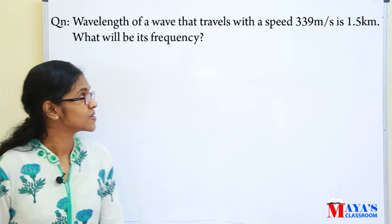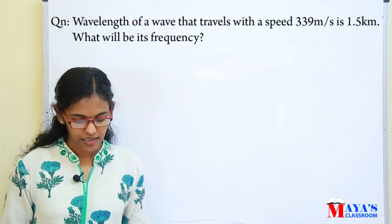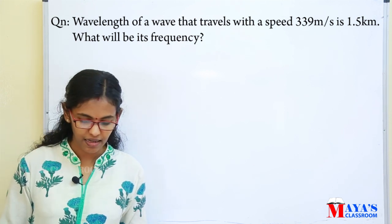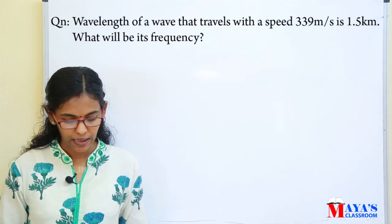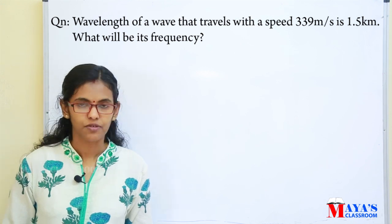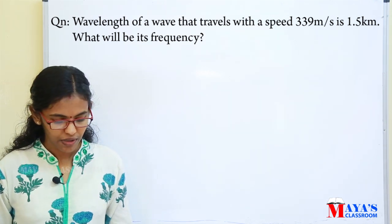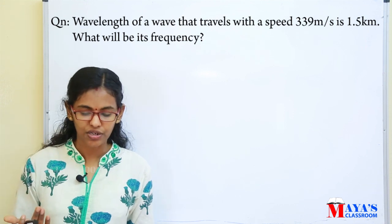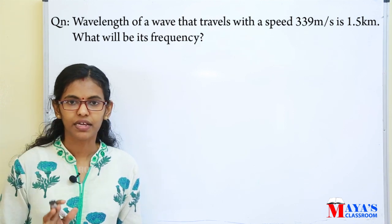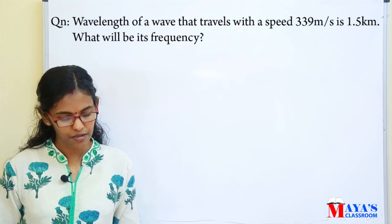Next question: the wavelength of a wave that travels with a speed of 339 meters per second is 1.5 kilometers. What will be its frequency? The speed is 339 meters per second, and the wavelength is 1.5 kilometers.